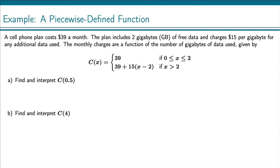So here's how we write piecewise defined functions. We have this curly brace and we just list out the different ways that it is defined. So this function is defined to be just 39, but it's defined in that way only if x is between 0 and 2, including 0 and 2.